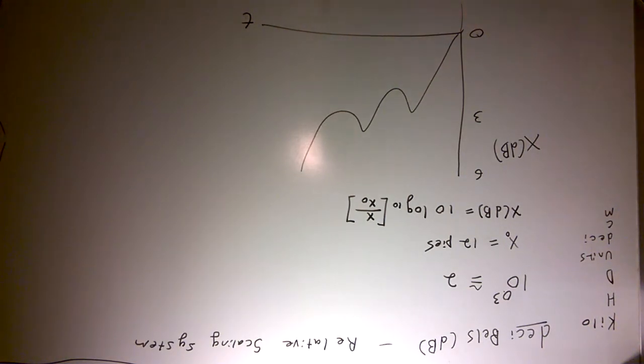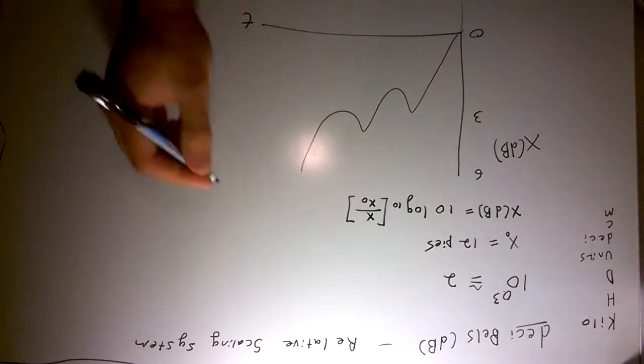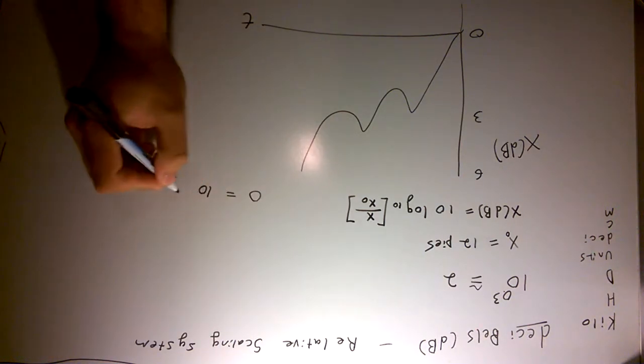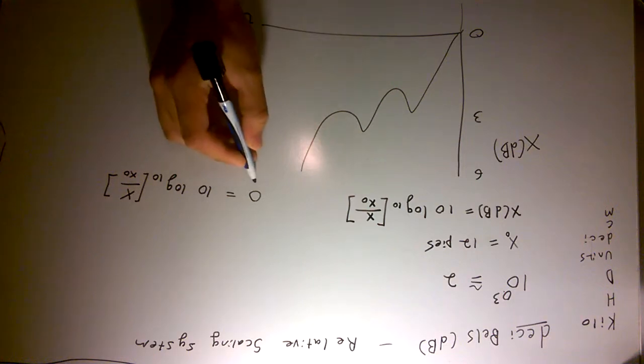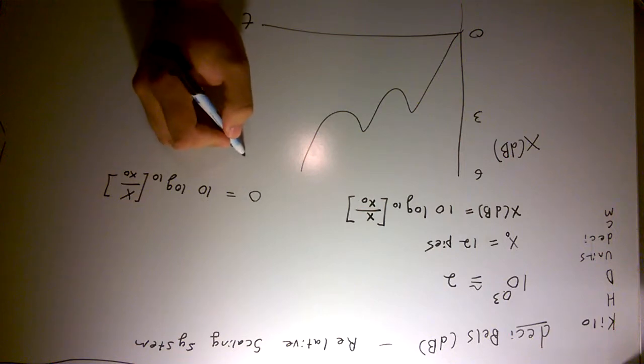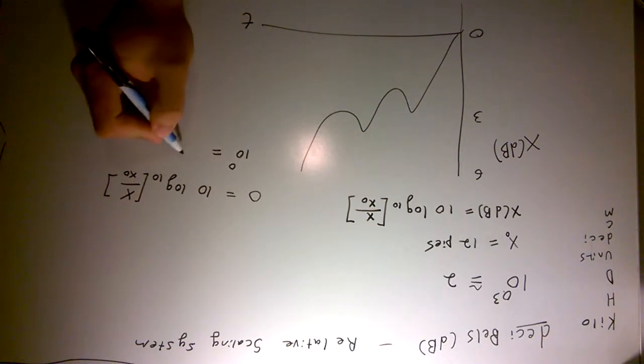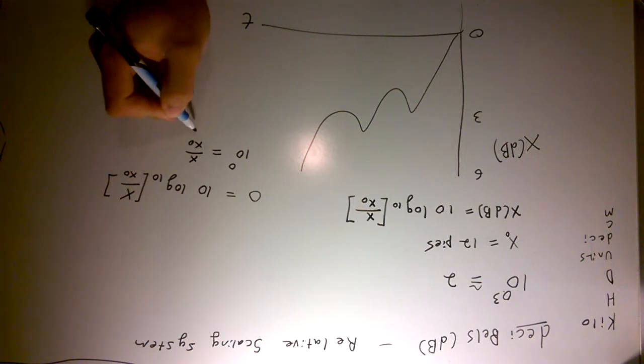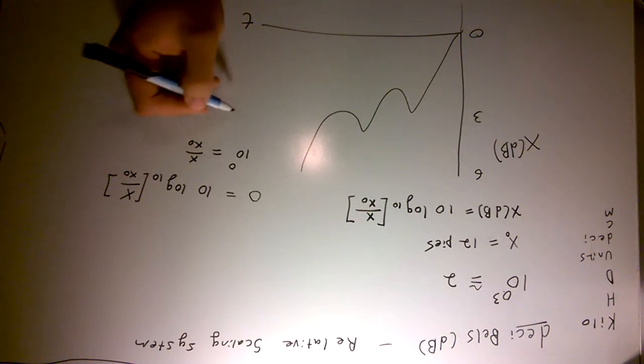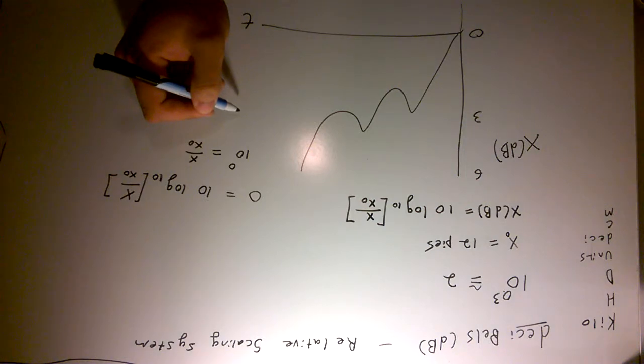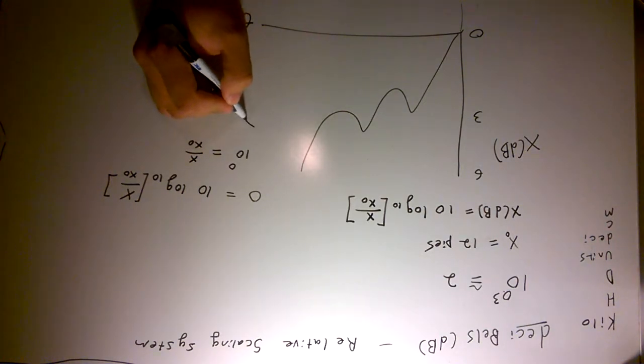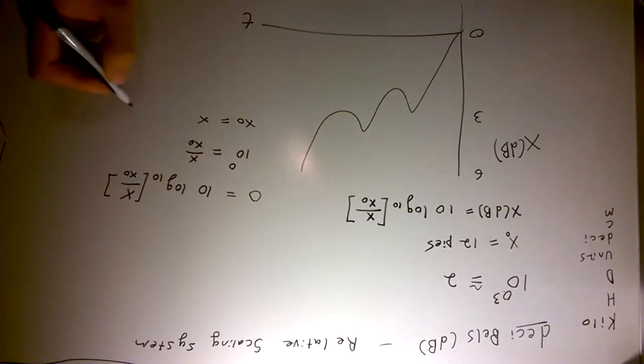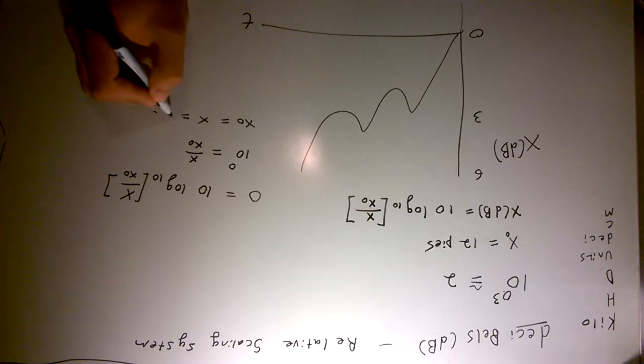But let's evaluate this at zero decibels. So zero decibels equals ten log ten of x over x naught. We know that zero divided by ten is still zero, and if we raise both sides to ten, we get ten to the zero equals x over x naught. Ten to the zero is just one, x naught goes to the other side, and you have x naught equals x. So at zero decibels you still have 12 pies.